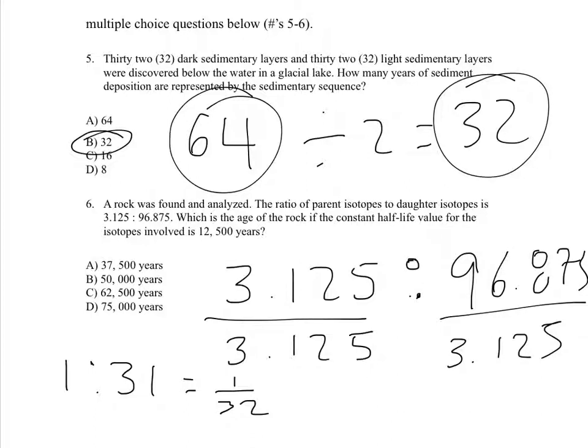So a half, a quarter, 1 over 8, 1 over 16, 1 over 32. That tells us that we have 5 half-lives that occurred. So now what we're going to do is take the 5 half-lives and multiply by 12,500. And once we do that, we will get the final answer to be 62,500.